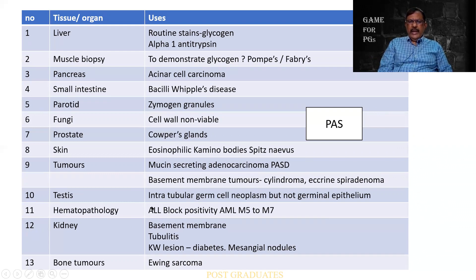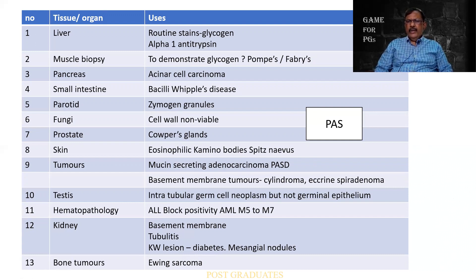Hematology — ALL will be showing a block positivity and it can also be positive for AML M5 to M7. In the kidney, three classical things: basement membrane, tubulitis, and the reabsorption of glycogen in the form of Armanni-Ebstein lesion in diabetes mellitus. Bone tumours — Ewing's sarcoma. I am reading this list purposely because it should enter your mind. They will definitely ask you what is the application of the PAS, and you will have to rattle off at least 10 of these.